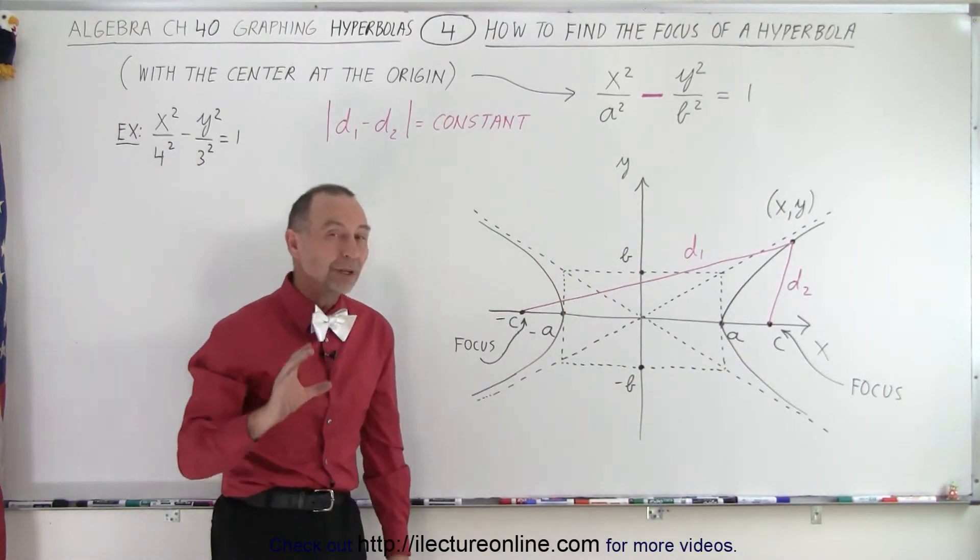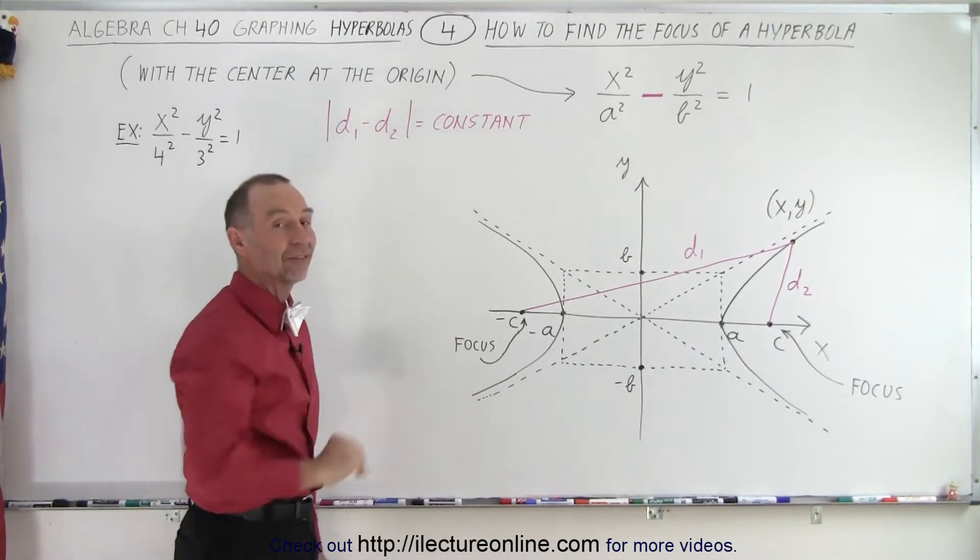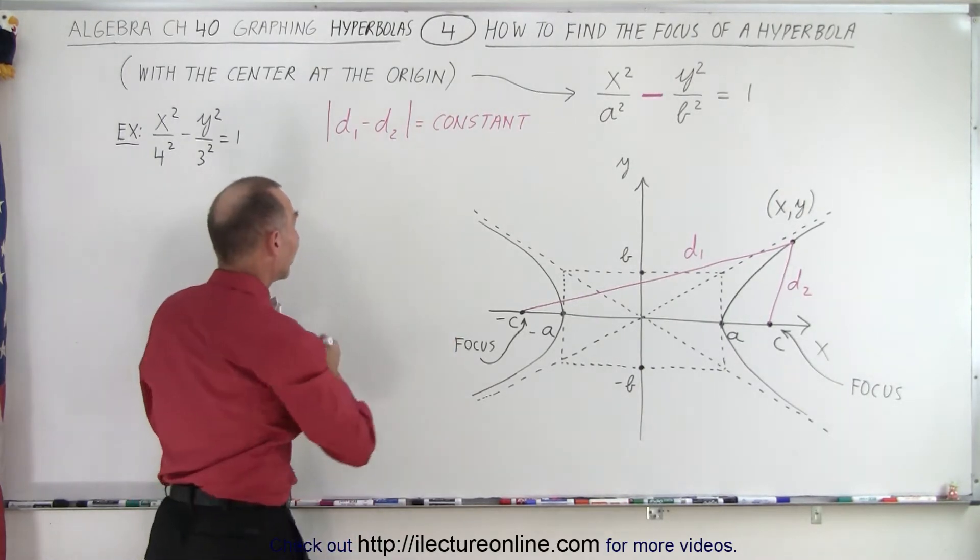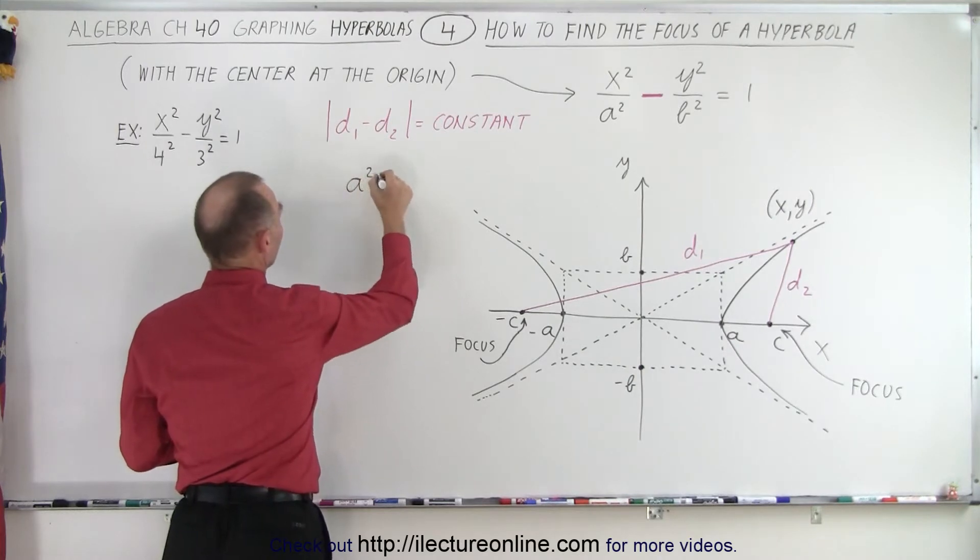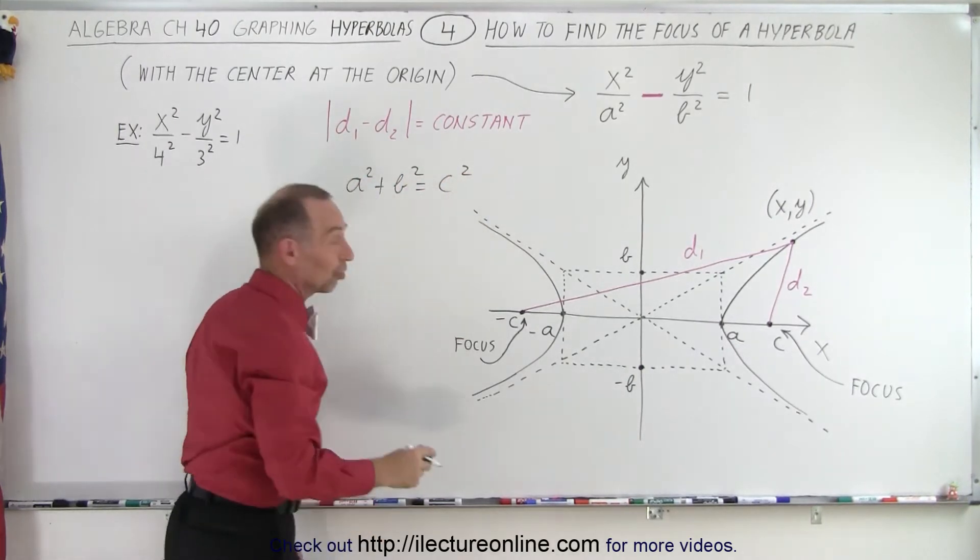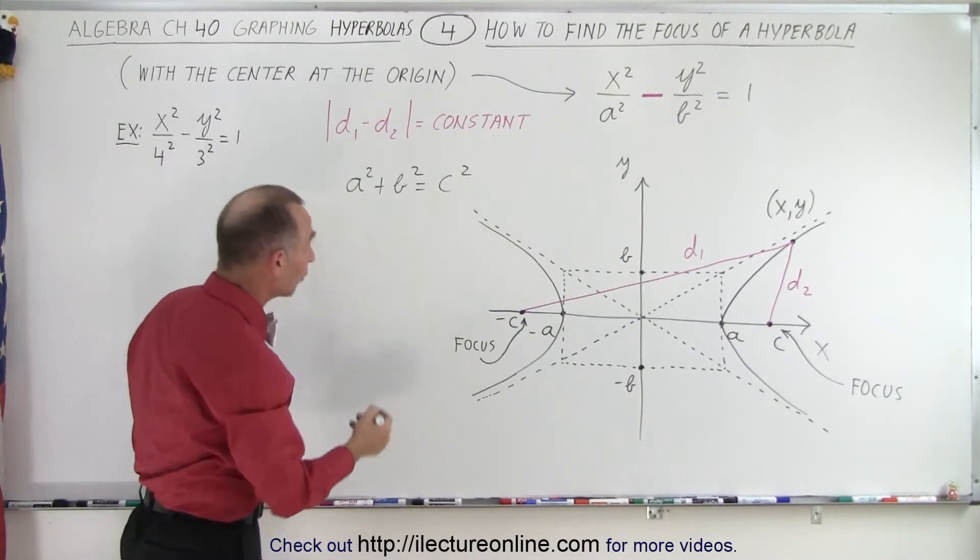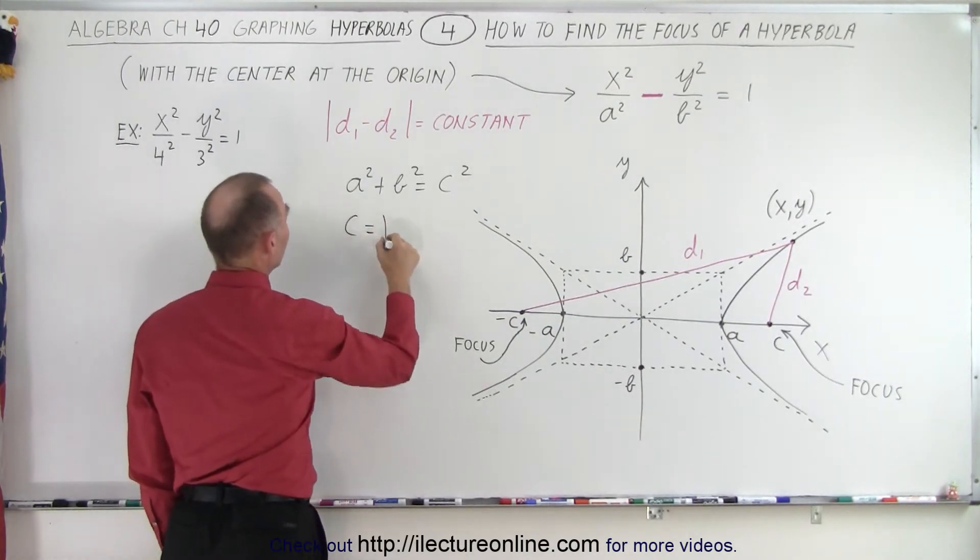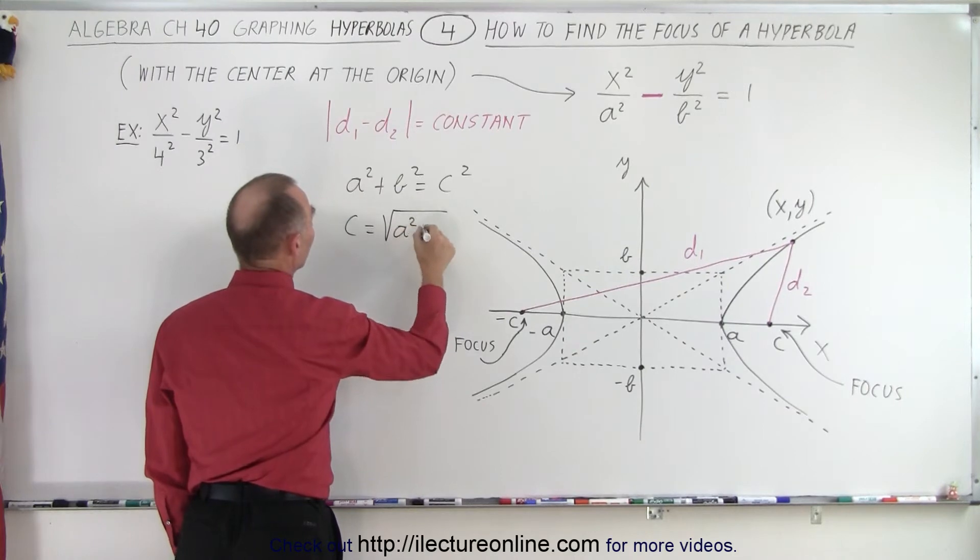There's indeed a relationship between a, b, and c. It turns out that a² plus b² equals c², or c, the distance to the focus, is equal to the square root of a² plus b².